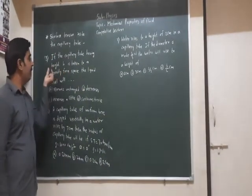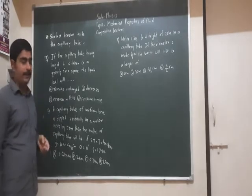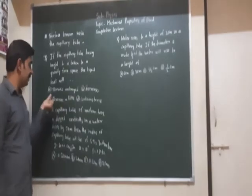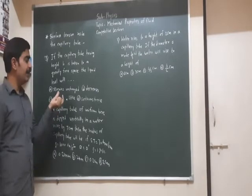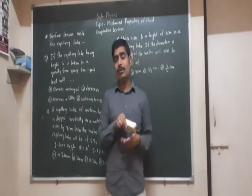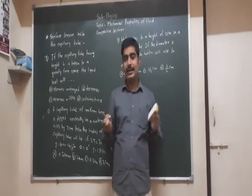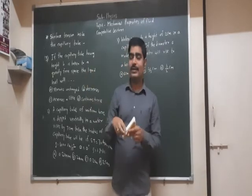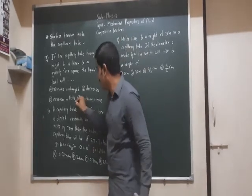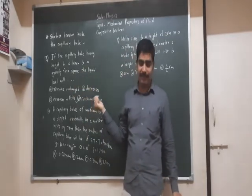Question 1: If a capillary tube having a height H is taken to gravity-free space, the liquid will — Option A: remains at the same height; Option B: liquid falls; Option C: increases and returns; Option D: continues to rise. The water surface is held back by gravitational force. So if gravitational force is not there and we have taken the gravity-free space, then inside the tube the liquid will rise continuously. So Option D is correct — in gravity-free space, the liquid will continue to rise.